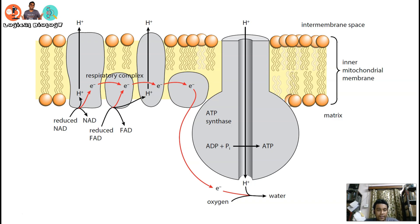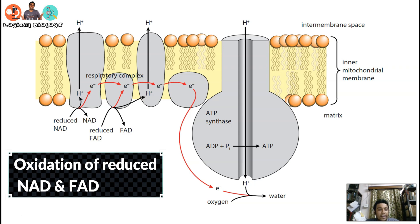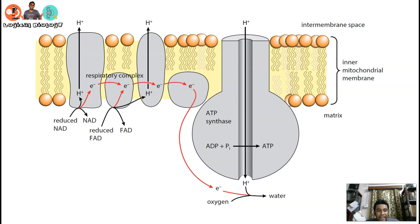First things first: the reduced NAD and reduced FAD are going to oxidize. The moment this oxidation happens, the reduced NAD and FAD liberate protons as well as electrons simultaneously.